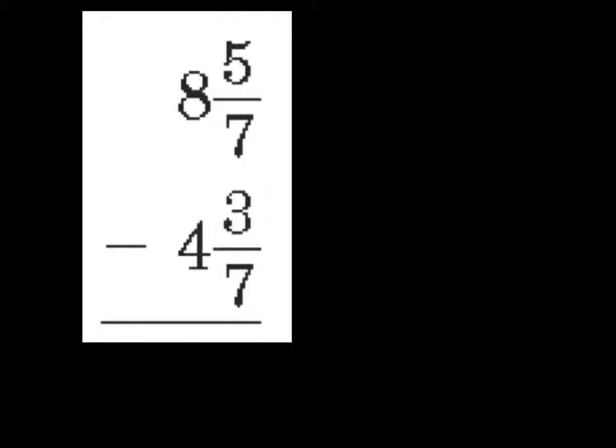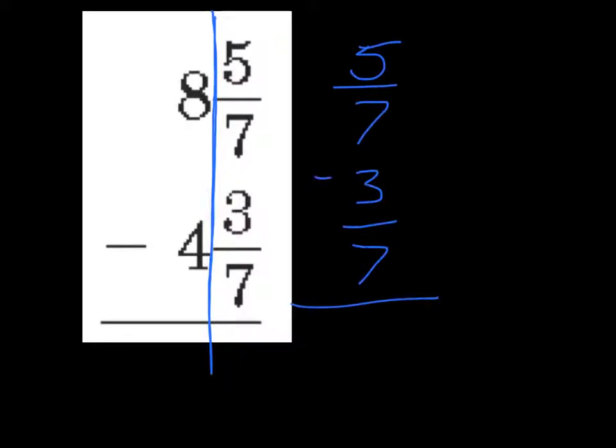So here I have 8 and 5 sevenths minus 4 and 3 sevenths. So think of splitting the problem down the middle and kind of thinking of it as two parts. First let's tackle the fraction part. So I have 5 sevenths minus 3 sevenths. Here I already have my common denominator so I don't need to rewrite the fractions. I just do 5 sevenths minus 3 sevenths gives me 2 sevenths.